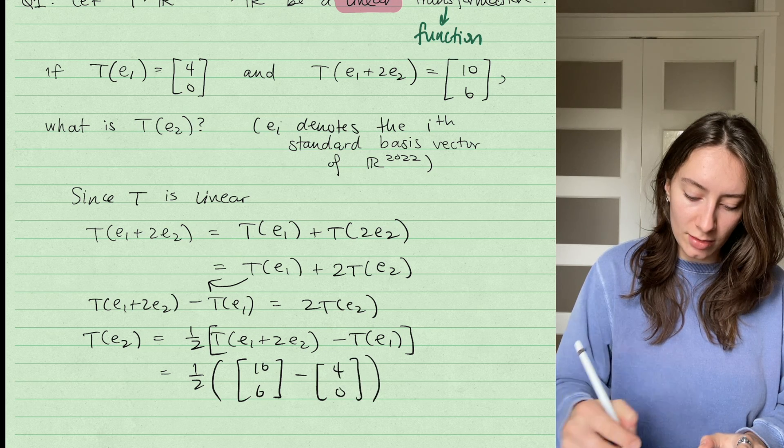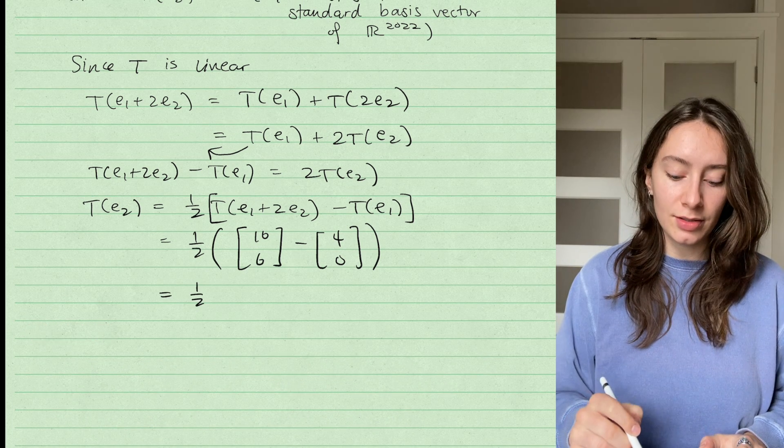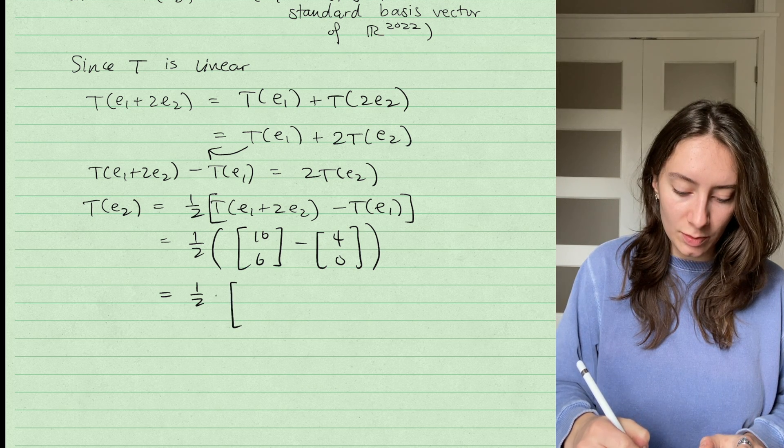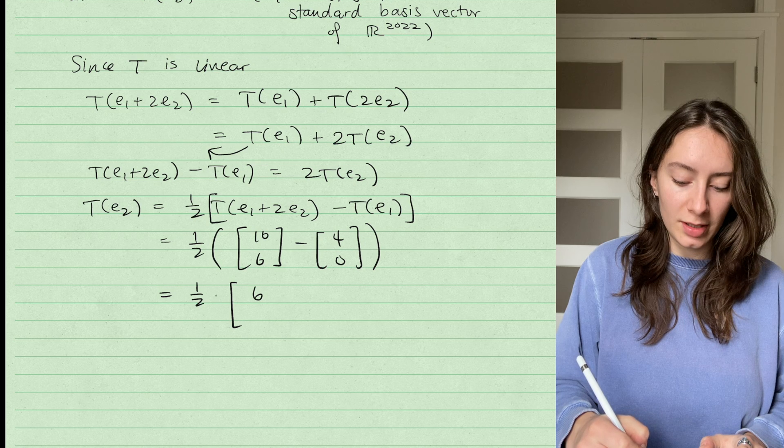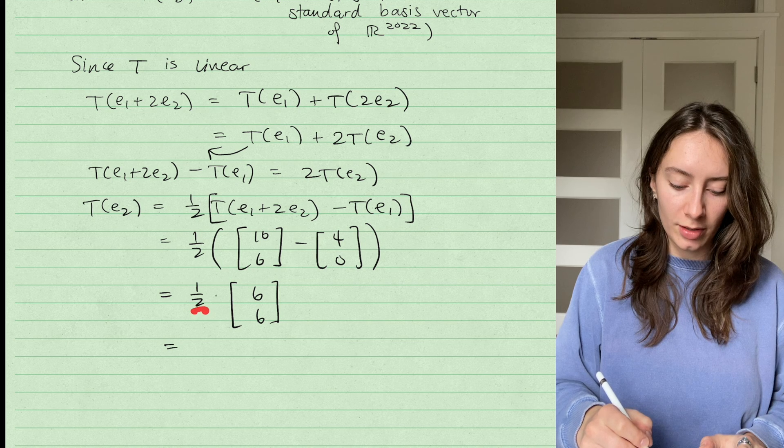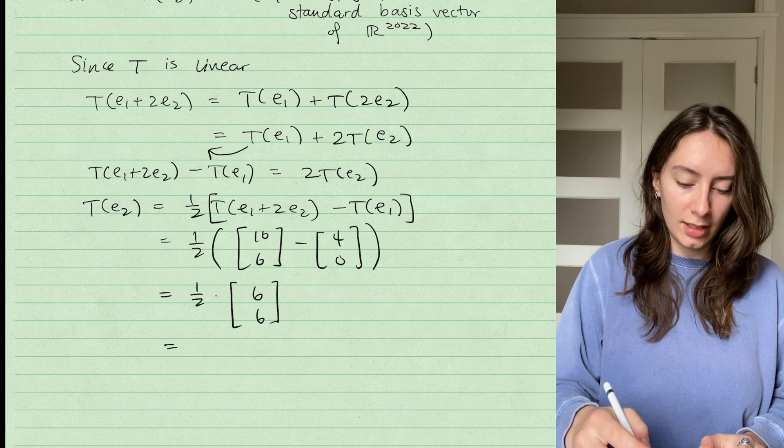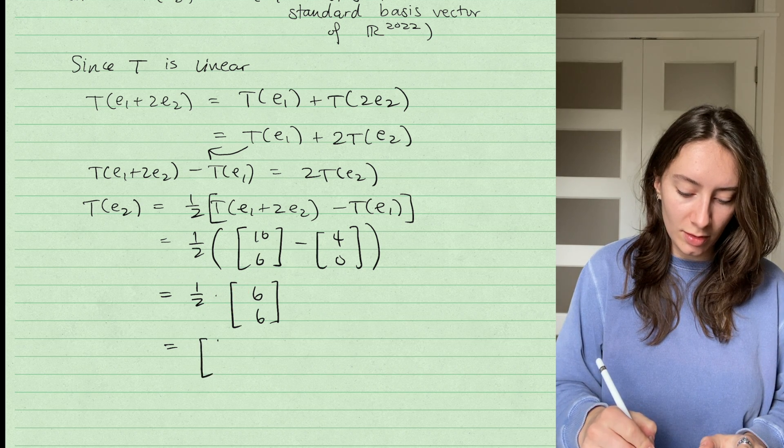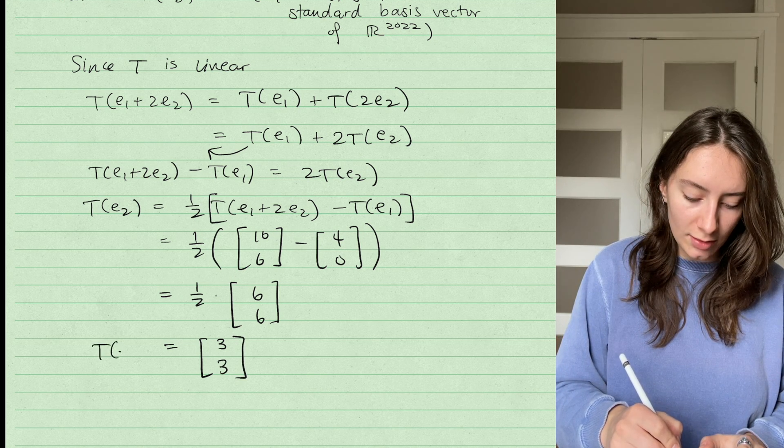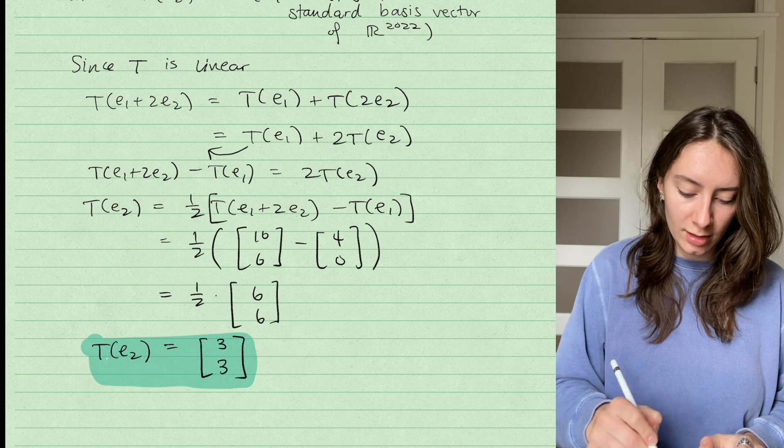And now all I need to do is subtract these vectors. When I subtract vectors, I just subtract their components. So I do 10 minus 4 gives me 6, and 6 minus 0 gives me 6. So I have 1/2 times the vector [6, 6]. And how we deal with scalar times a vector is we multiply that scalar into each component of the vector. So I'll have 1/2 times 6 in the first component, which is 3, and then 1/2 times 6 again, which is also 3. So I know that T(E_2) gives me the vector [3, 3]. Yay!